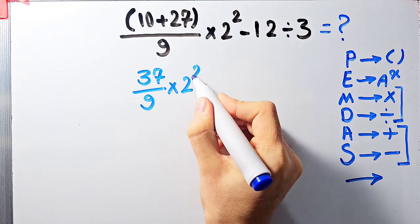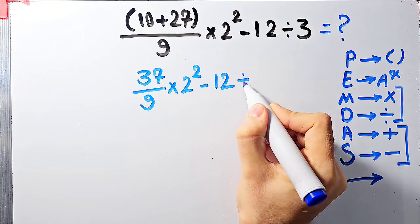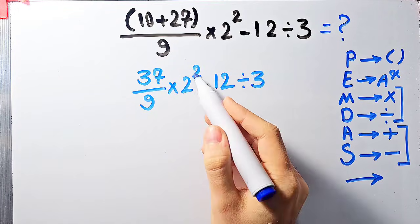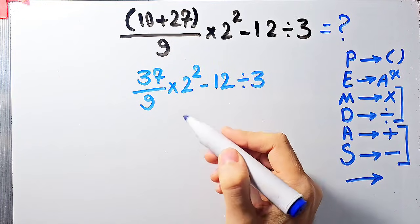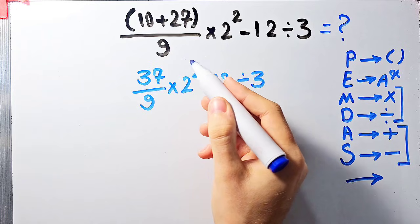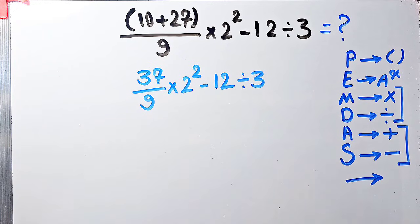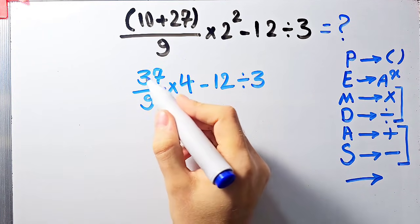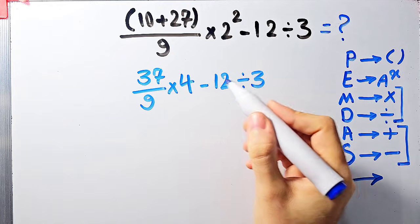Now we have multiplication, exponent, subtraction, and division. In this step we simplify the exponent: 2 to the power of 2 equals 4. So we have 37 over 9 times 4 minus 12 divided by 3. Now we have multiplication, subtraction, and division.